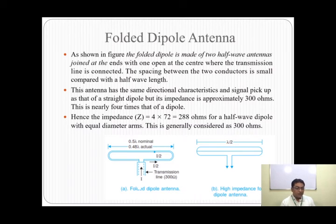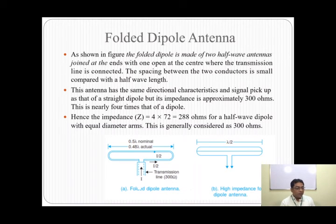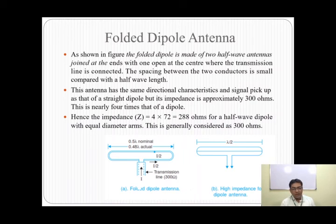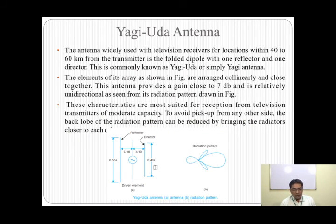The impedance of a half-wave dipole antenna is around 72 ohms. For the folded dipole, we multiply by four, so the impedance is 4 × 72 = 288 ohms, which is the approximate value for 300 ohms. A 300-ohm impedance is required for television receiving antennas, and that is why two half-wave antennas are connected in the folded dipole configuration.